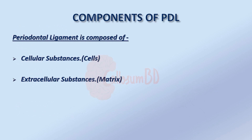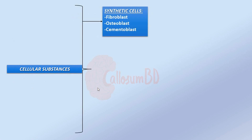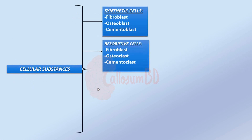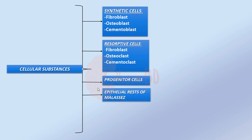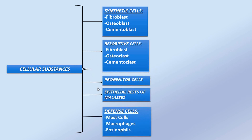The components of the periodontal ligament are composed of two types of substances: cellular substances and extracellular substances. Cellular substances are composed of synthetic cells, resorptive cells, progenitor cells, epithelial rests of Malassez, and defense cells.